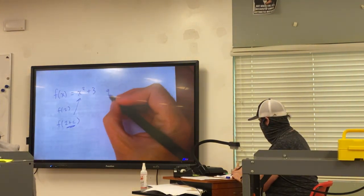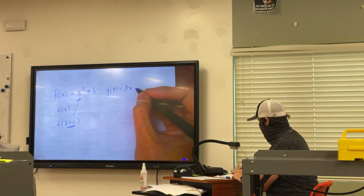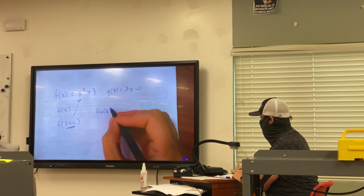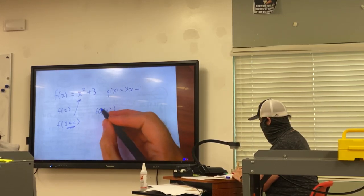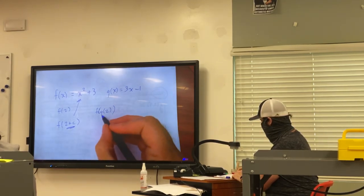Could I also have like g of x equals 3x minus 1? And do like f of g of 2. How would I do f of g of 2? First, what would I do? Plug 2 into g.